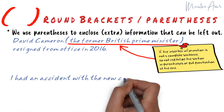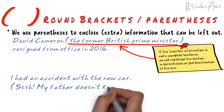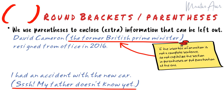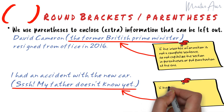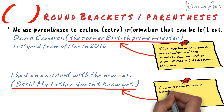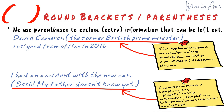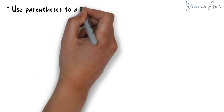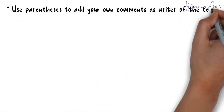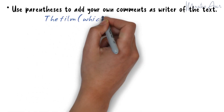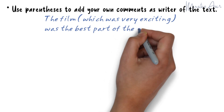For example: "I had an accident with the new car. (Shhh! My father doesn't know yet.)" Here the extra information is a complete sentence, so we capitalize the first letter and put the proper punctuation at the end of it. Also, use parentheses to add your own comments as the writer of the text — for example: "The film (which was very exciting) was the best part of the evening."